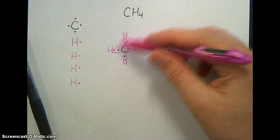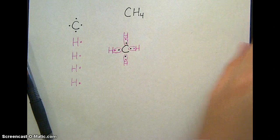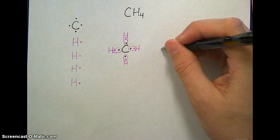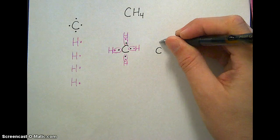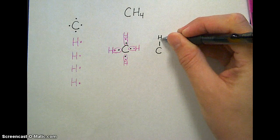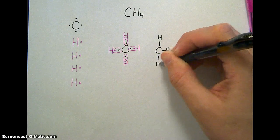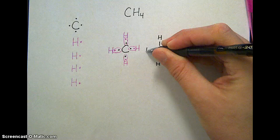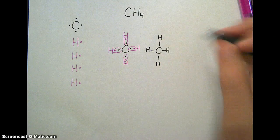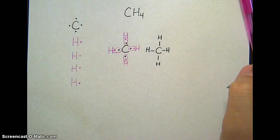Now this isn't a very neat way of drawing it. We're going to organize it a little better using straight lines. There's carbon sharing a pair of electrons with hydrogen, and with another hydrogen, and with another hydrogen, and with another hydrogen.